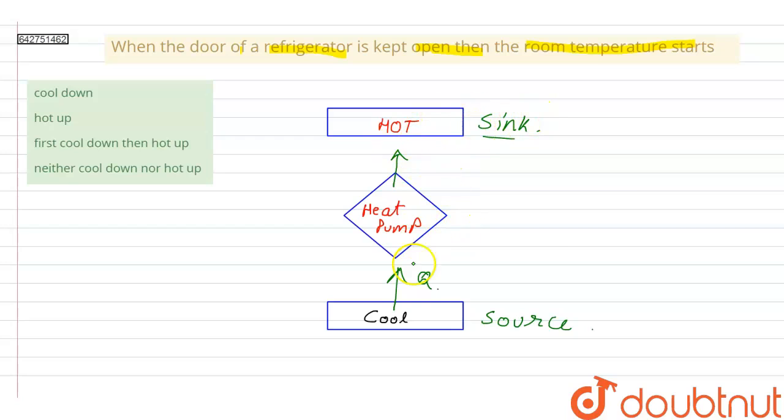And usually this sink is hotter than the source. Now as the sink is hotter than the source, this means some external work must be done on this heat pump. So it gives out heat to the sink as Q plus heat generated due to this work W.